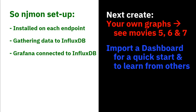You've got njmon installed on each of your endpoints — your virtual machines or LPARs — and you've got them gathering data and using one of the mechanisms to get that data to the InfluxDB database. You have Grafana set up and connected to your Influx database. You're ready to create graphs. There are two ways of doing that.